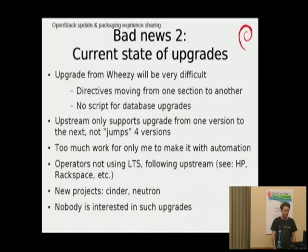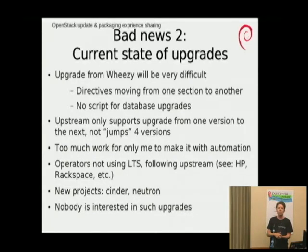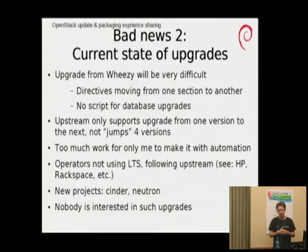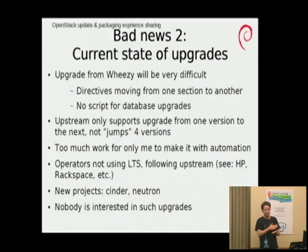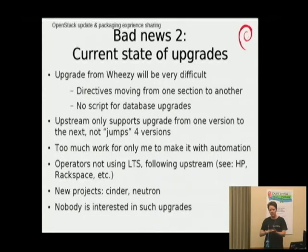The second bad news is that it's going to be difficult for anyone running Essex in Wheezy to upgrade to the version that will be in Jessie, because it's not supported upstream to upgrade from one version and then jump four versions up. Everyone in the cloud just upgrades from every release every six months. You can use the GPL host repository and go from Essex to Grizzly, then Havana, then Icehouse, upgrading from one to the next — that is still possible.